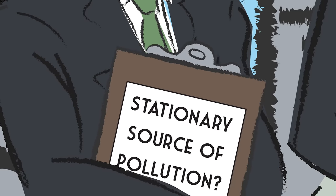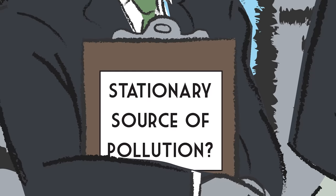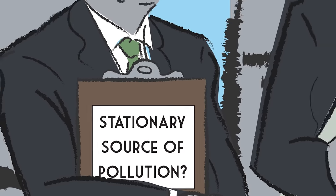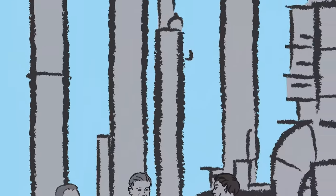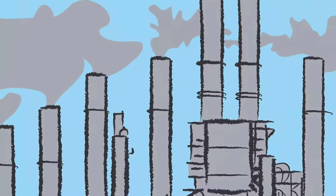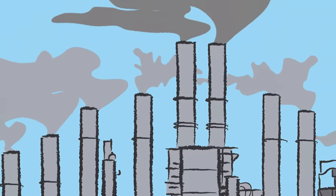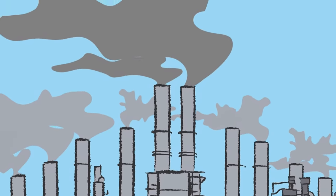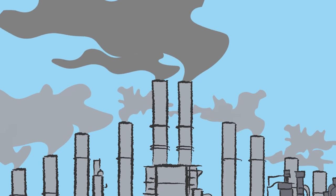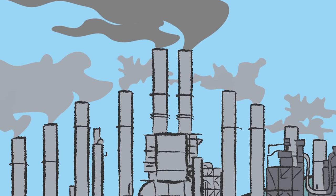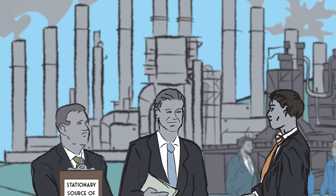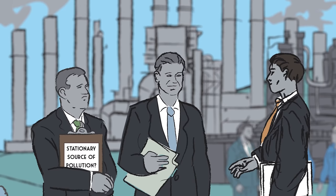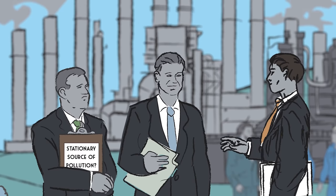The problem the agency addressed was: what's a stationary source of pollution? Suppose you've got a factory with 10 smokestacks. Those 10 smokestacks are producing, at a given point in time, a certain amount of pollution. Let's assume the agency is okay with the factory producing that amount of pollution. The problem is you don't want to get more pollution out.